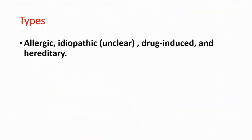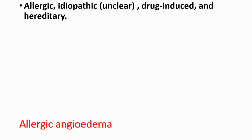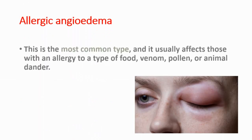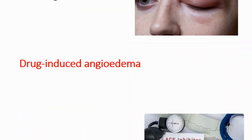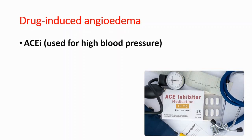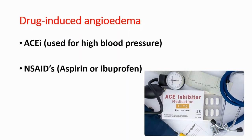We have four types of angioedema: allergic, idiopathic (which means the reason is unclear), drug-induced, and hereditary. Allergic angioedema is the most common type and usually affects those with an allergy to a type of food, venom, pollen, or animal dander — this is not a chronic situation. Drug-induced angioedema is generally caused by ACE inhibitors, which are drugs used for high blood pressure. It can also be caused by NSAIDs such as aspirin or ibuprofen, but that is less common.